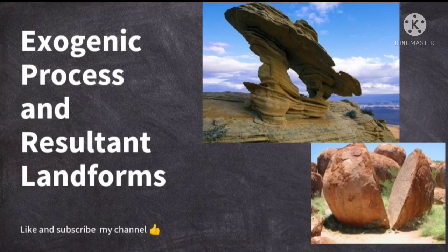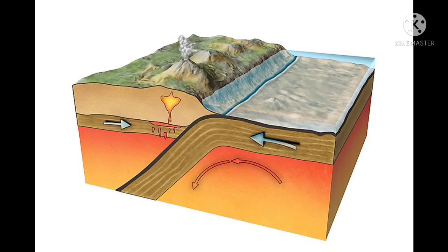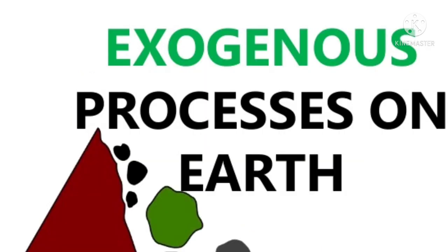In that particular topic I discussed that landforms are the result of exogenous and endogenous processes. Endogenous processes act internally within the earth and develop irregularities on the surface. On the other hand, exogenic processes act externally and try to level these irregularities. Our topic of discussion today will be based on exogenous processes and the landforms developed by these processes.